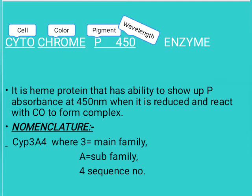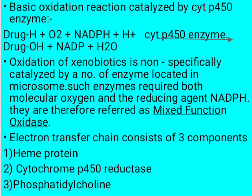It is a heme protein that has the ability to show maximum absorbance at 450 nanometers when it is reduced and reacts with carbon monoxide to form a complex. Nomenclature example: CYP3A4, where '3' is the main family, 'A' is the sub-family, and '4' is the sequence number of the family. The basic oxidation reaction catalyzed by cytochrome P450 enzyme is: Drug-H plus oxygen...